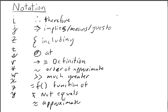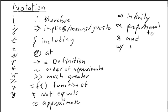The infinity symbol is obviously infinity. You have alpha is proportional to. Obviously the and symbol is and. You have W with a line for with, and W with a slash for without. And then I like to just use PT for point.